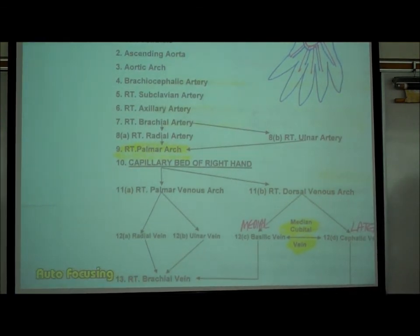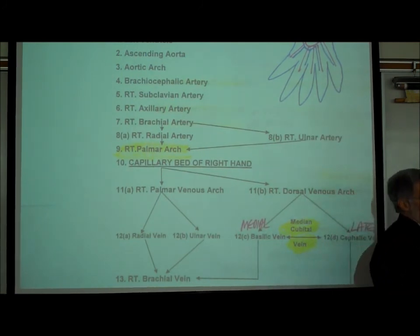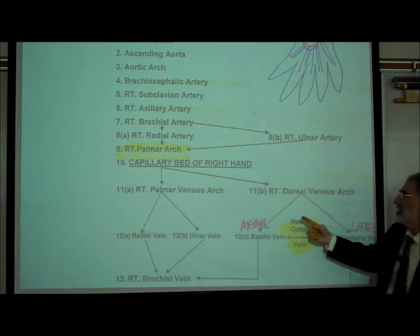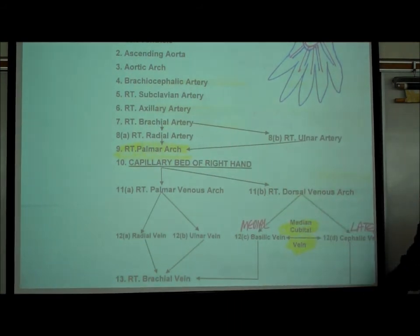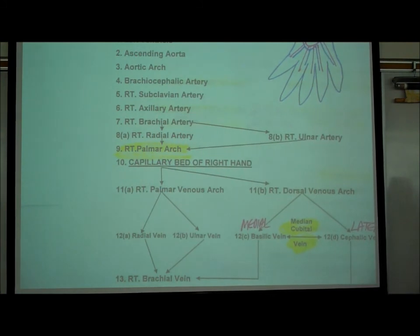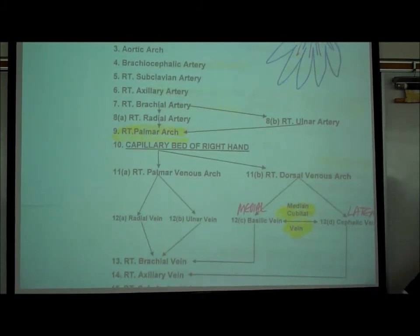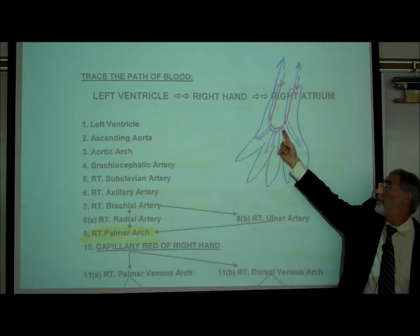As it reaches the middle of the arm, it's called the brachial artery. As the brachial artery goes into the forearm, it bifurcates into a right radial and a right ulnar artery. Finally, it forms a palmar arch, and then we have the capillaries of the right hand.